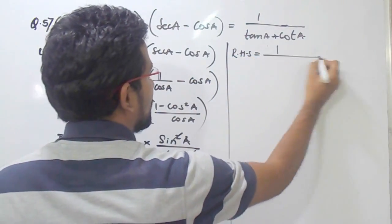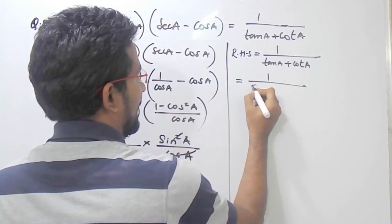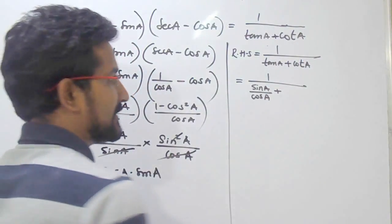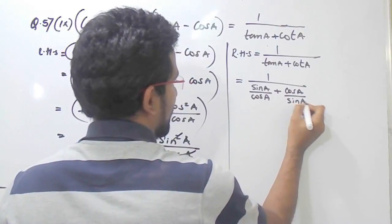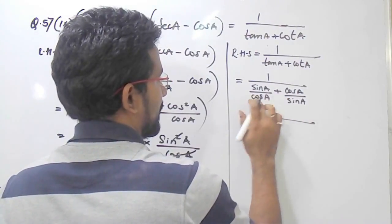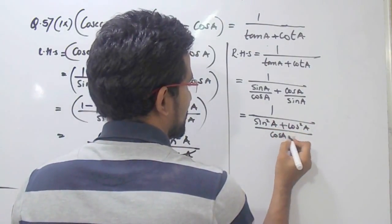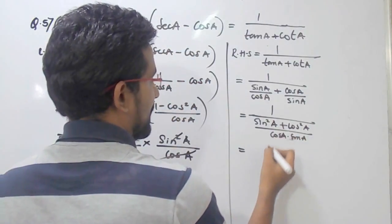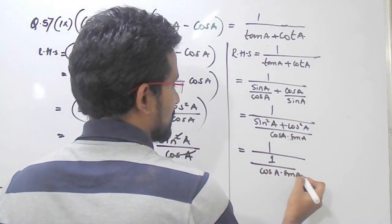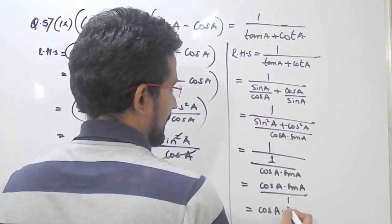So RHS is 1 upon tan A plus cot A. So tan A is nothing but sin A upon cos A, and we will also write cot A in terms of cos and sin, so it will be cos A by sin A. Now we will do the cross multiplication or take the LCM. So it will be sin square A plus cos square A divided by cos A into sin A. Now sin square A plus cos square A is nothing but 1, so it will be 1 divided by cos A into sin A. Simplifying further, we get cos A into sin A.